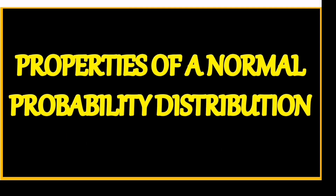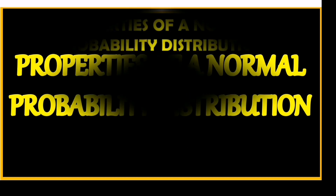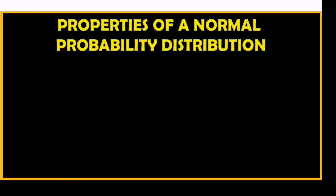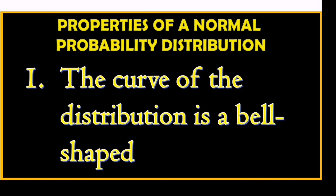Let us tackle first the properties of a normal probability distribution. Number 1: The curve of the distribution is bell-shaped.